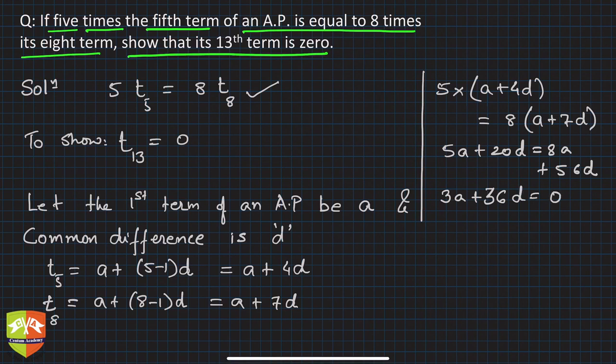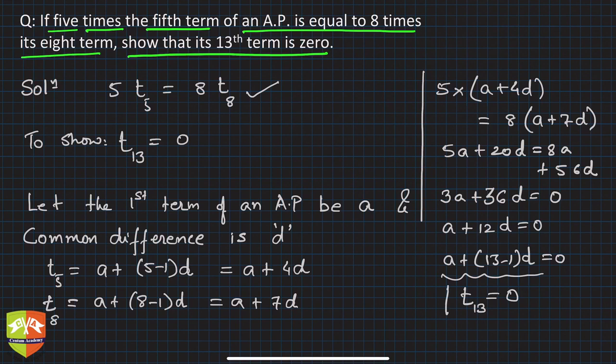If you cancel 3 from the equation, you'll get a + 12d = 0. So a + 12d can be written as a + (13-1)d = 0, and what is this? This is nothing but the 13th term. t₁₃ = 0, and that is what we needed to prove.